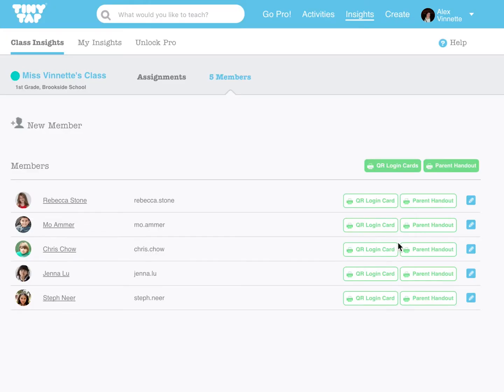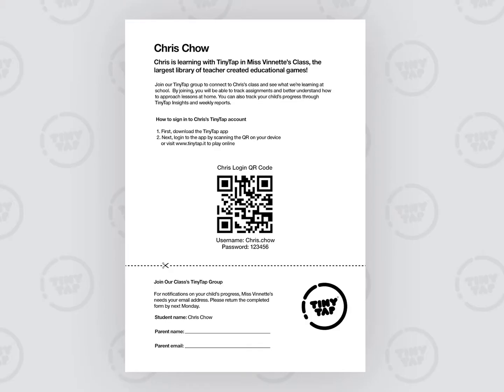Make it easier for students to complete work at home. Click on Parent Handout to generate a personalized information sheet for each student. With QR Login, it's easy for students to complete assignments and work with parents to master concepts at home. Parents can hang the QR code on the fridge or in the child's room so kids can sign in independently and learn on TinyTap!